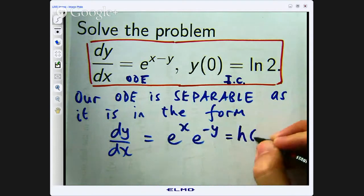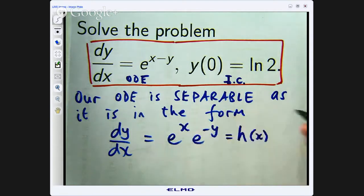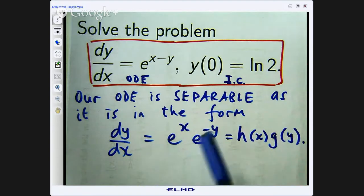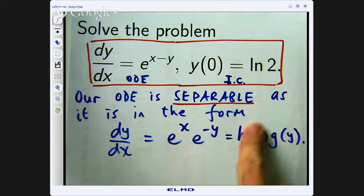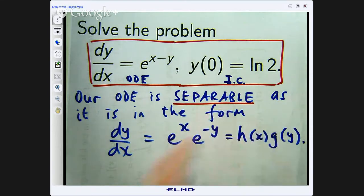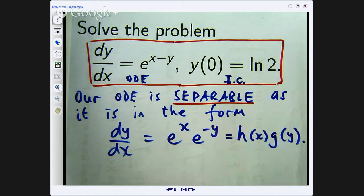Here h would be e to the x and g would be e to the negative y. So whenever we have dy/dx equals this, a product of the functions with the functions separated, then we can call this form a separable differential equation.